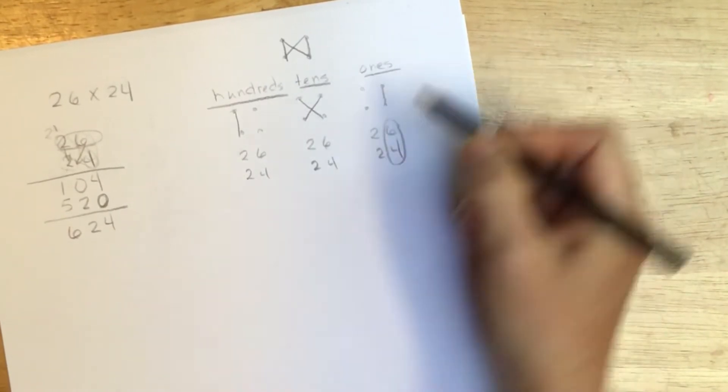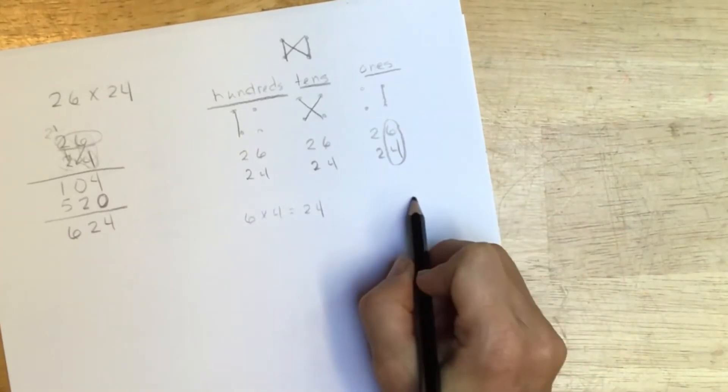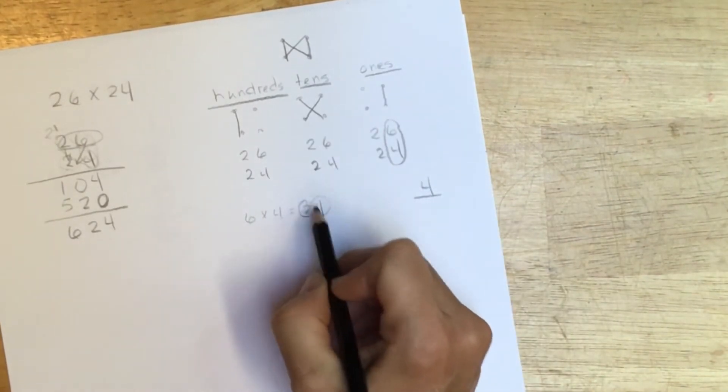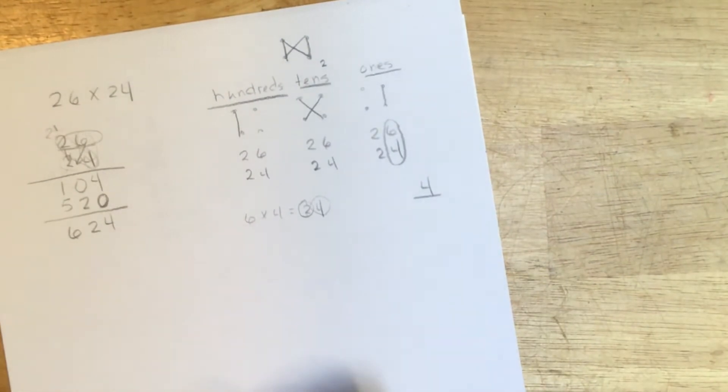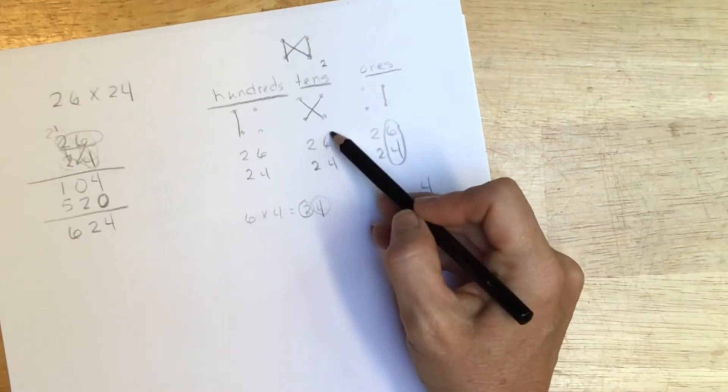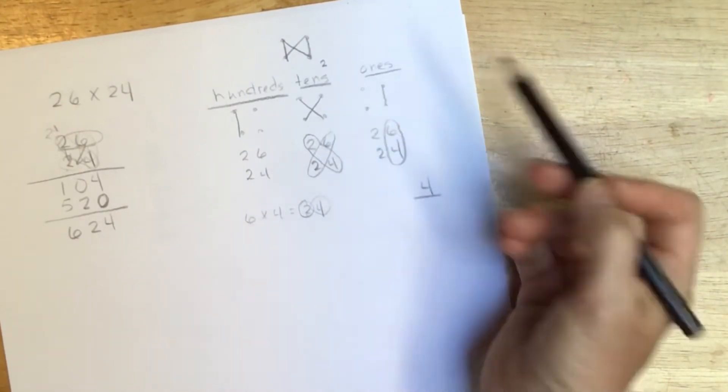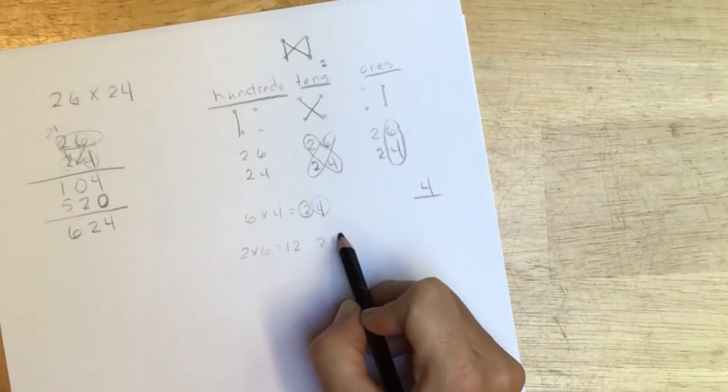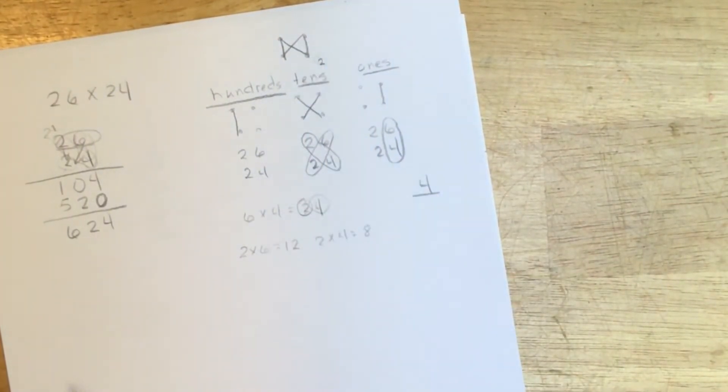So going over the first step, we'll acquire our ones or find out what our ones is. Six times four is 24, so our ones is this four right here, and this two tens will be placed up here so that I know to add it to our other tens. To find out what our tens digit is, I multiply 2 by 6 and 2 by 4. Two by six is 12, two by four is 8.